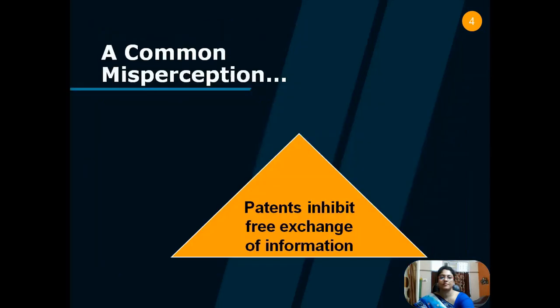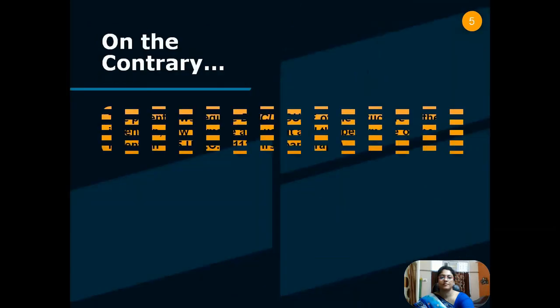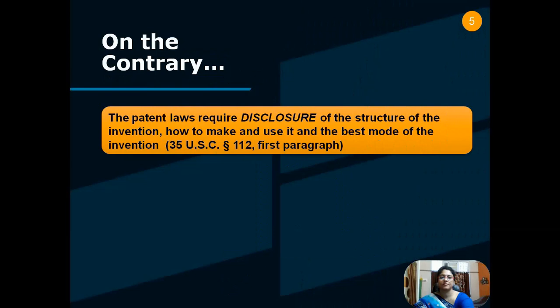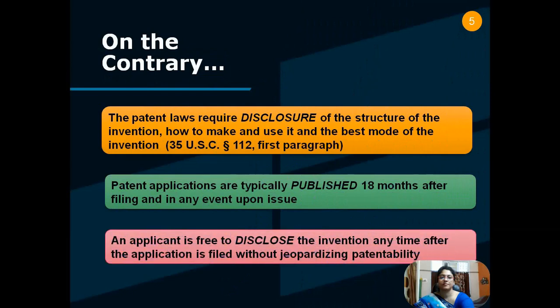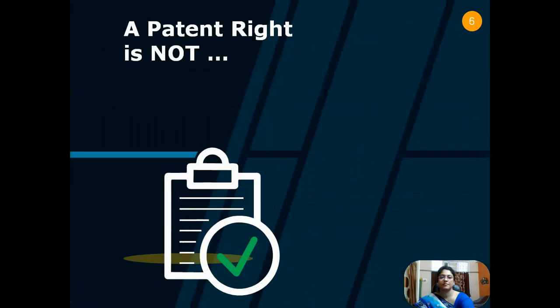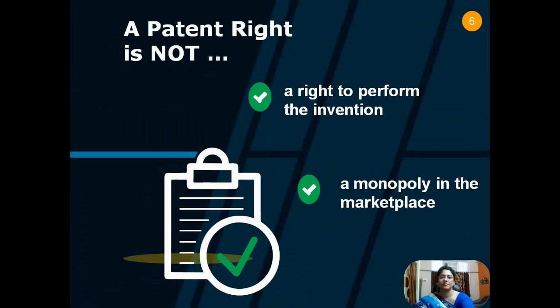There is a common misperception that patents inhibit free exchange of information. On the contrary, the patent laws require disclosure of the structure of the invention, how to make and use it, and the best mode of the invention. Patent applications are typically published 18 months after filing and in any event upon issue. An applicant is free to disclose the invention any time after the application is filed without jeopardizing patentability. A patent right is not a right to perform the invention — a monopoly in the marketplace.